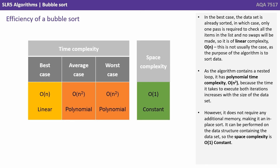This is not usually the case, as the purpose of the algorithm is to sort a data set. As the algorithm contains a nested loop, it has a polynomial time complexity — O(n²) — because the time it takes to execute both iterations increases with the size of the data set. However, it does not require any additional memory, making it what we call an in-place sorting algorithm. It can be performed on the data structure containing the data set, so the space complexity is O(1) — constant, it doesn't change.